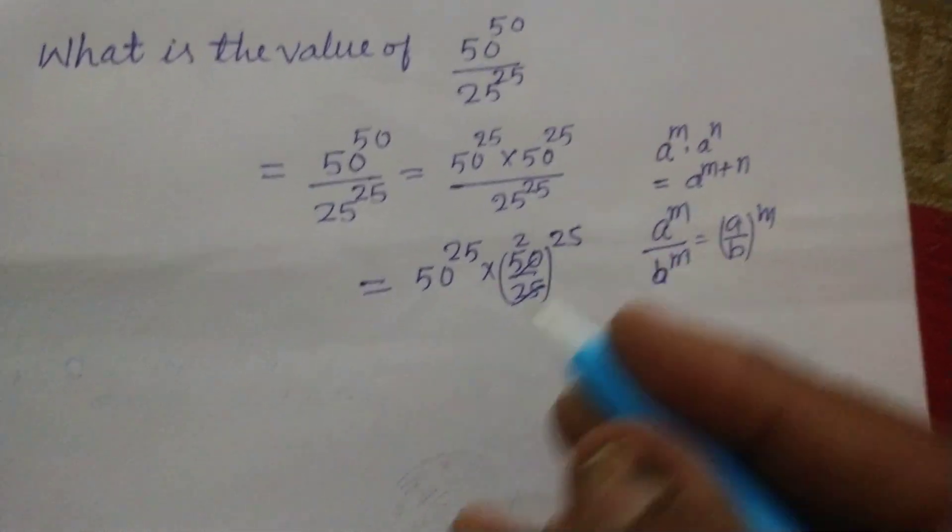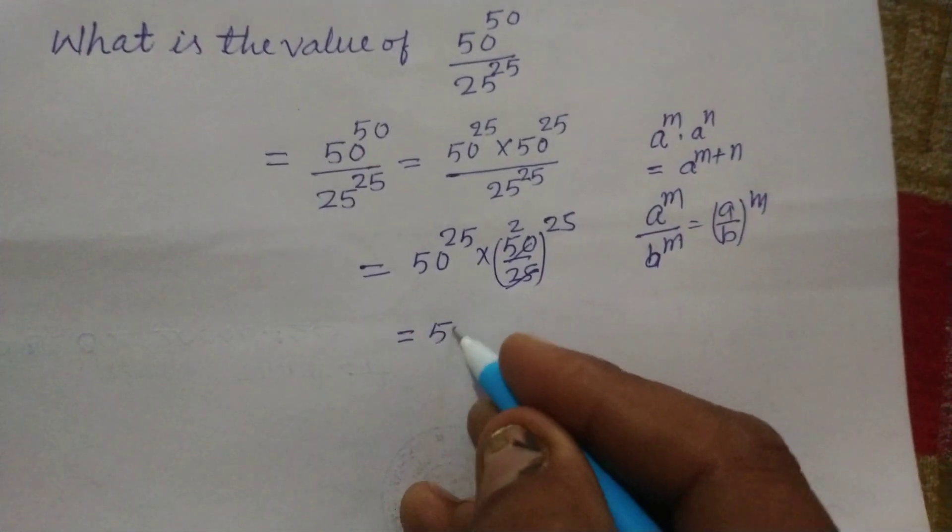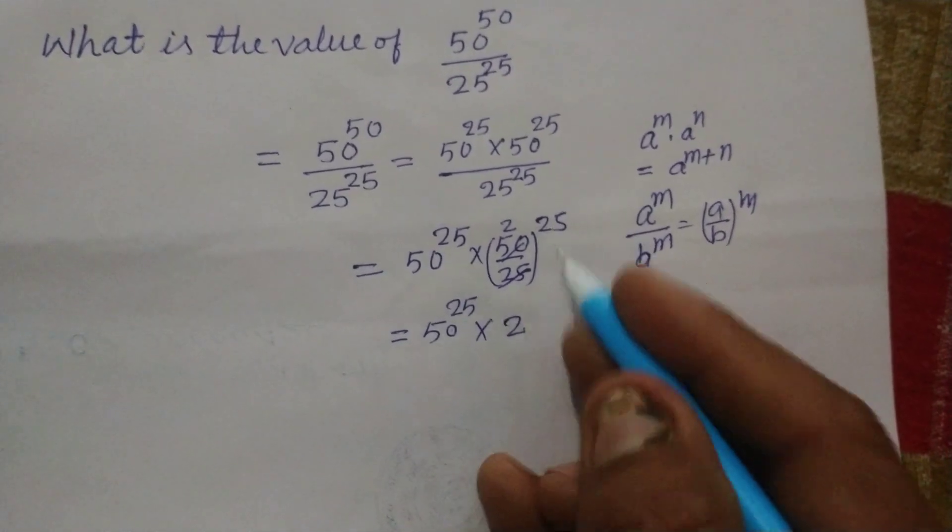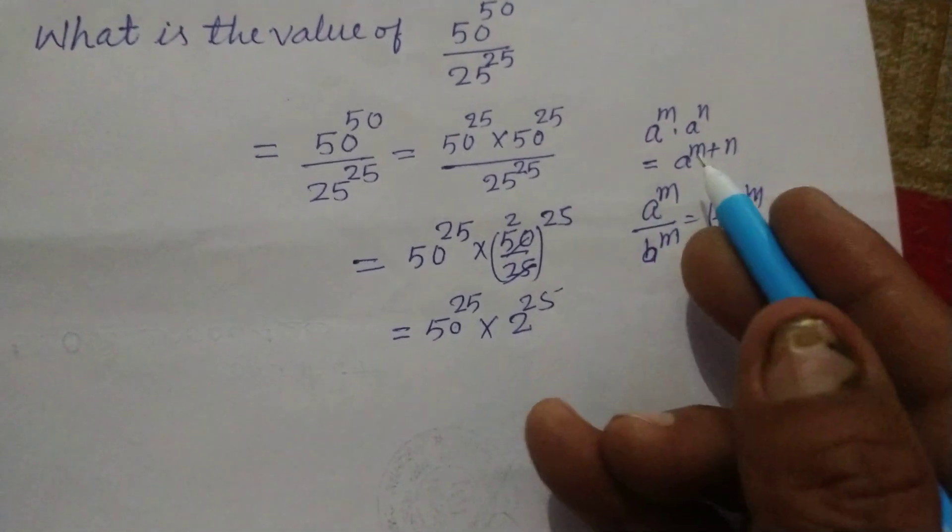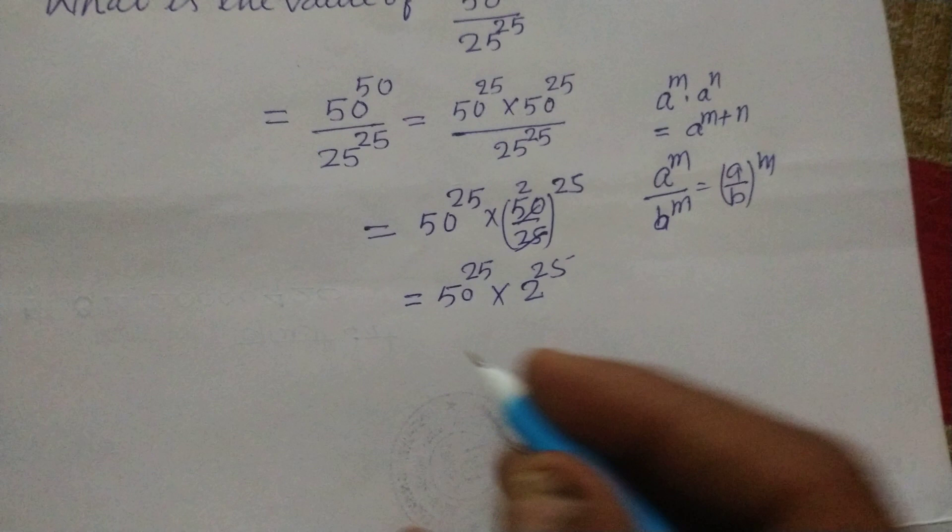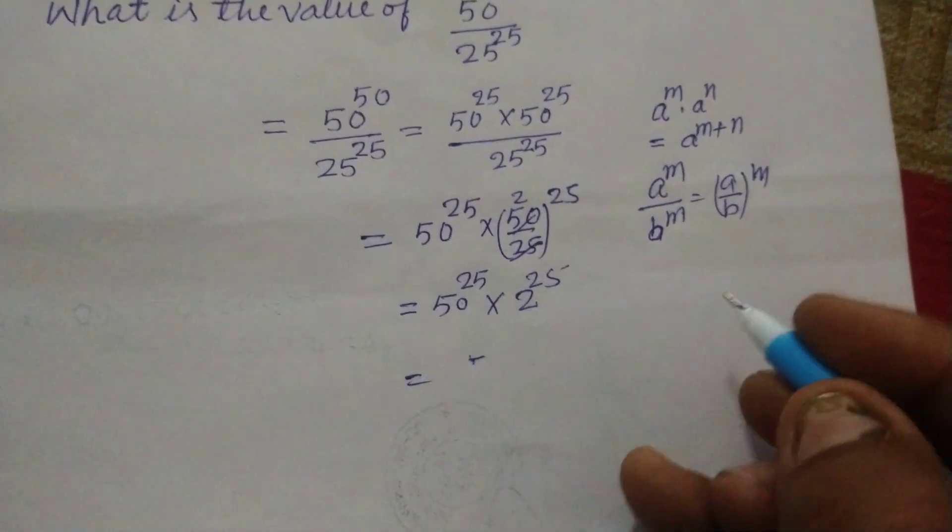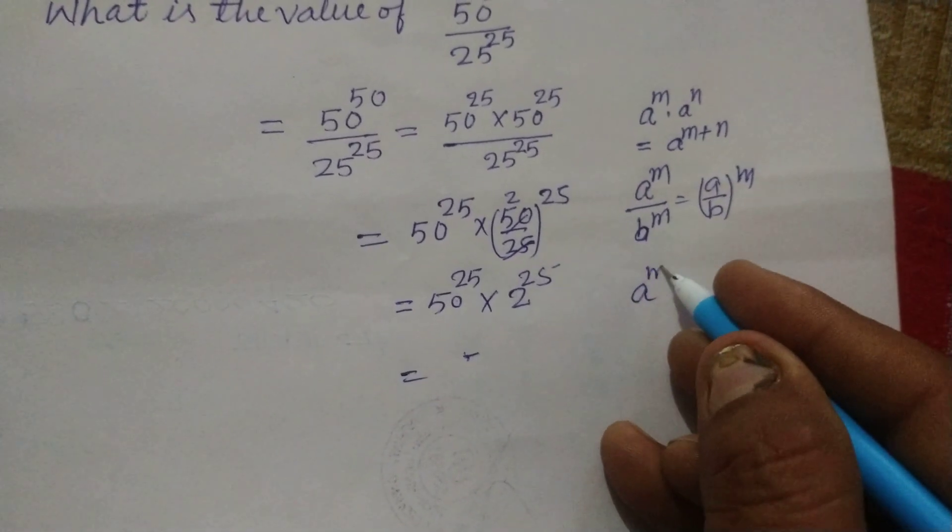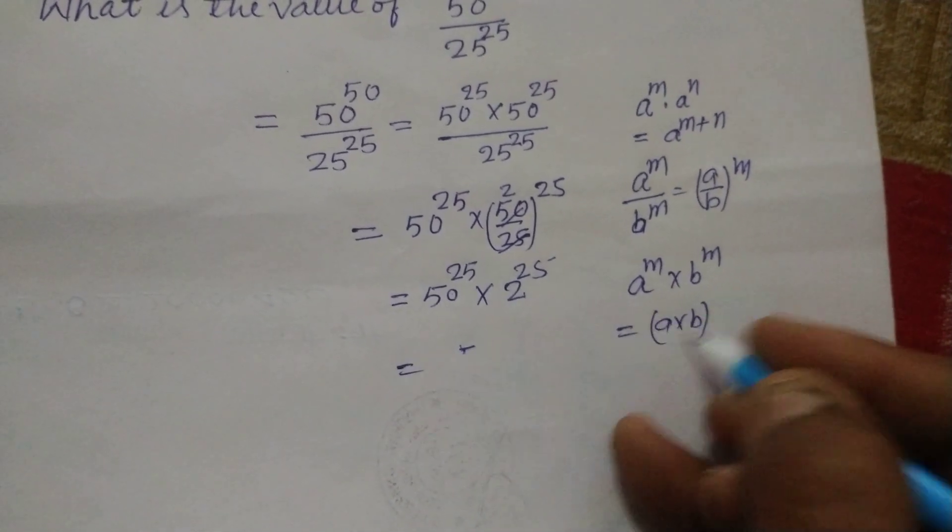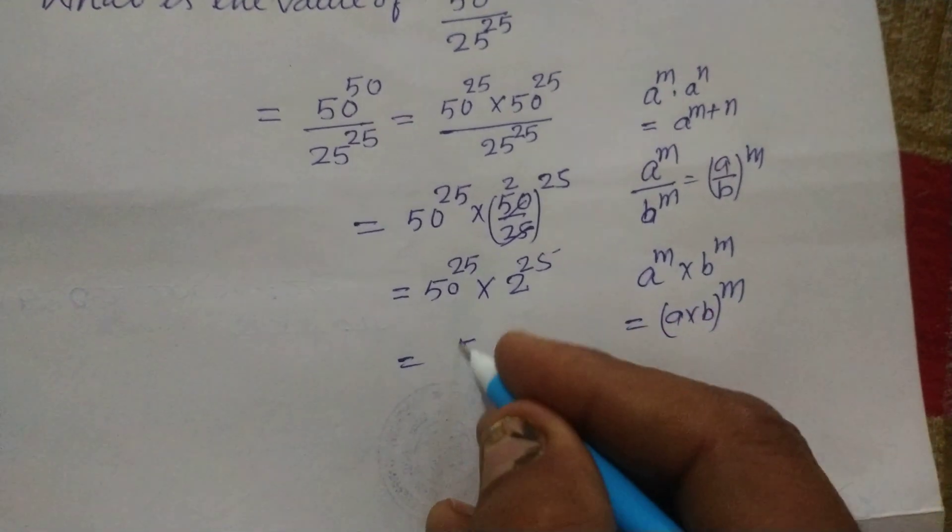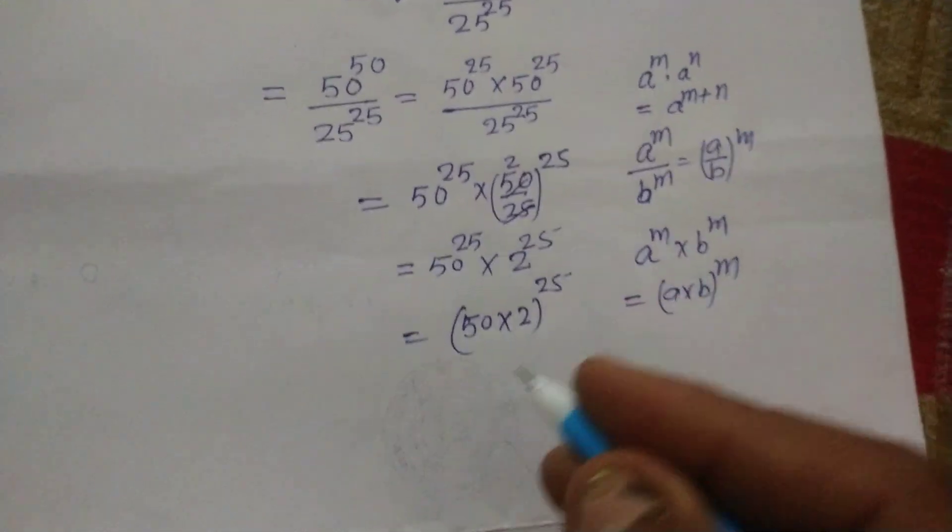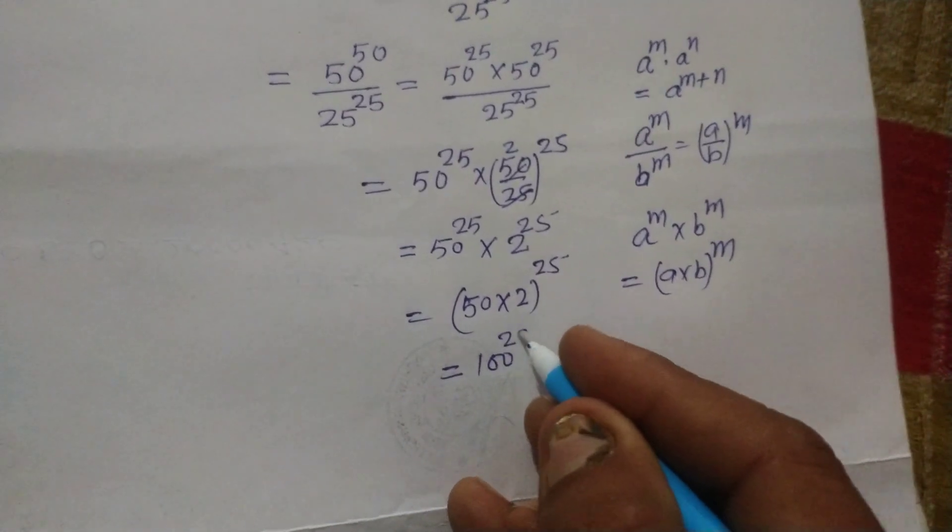So 50 to the power 25 into 2 to the power 25. Now again we use this law that a to the power m into b to the power m equal to a into b to the power whole m. So by using this, 50 into 2 to the power 25. So this becomes 100 to the power 25.